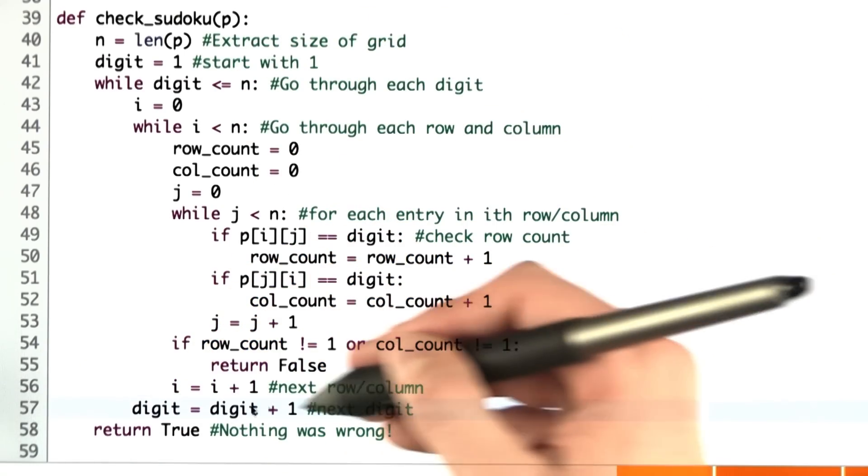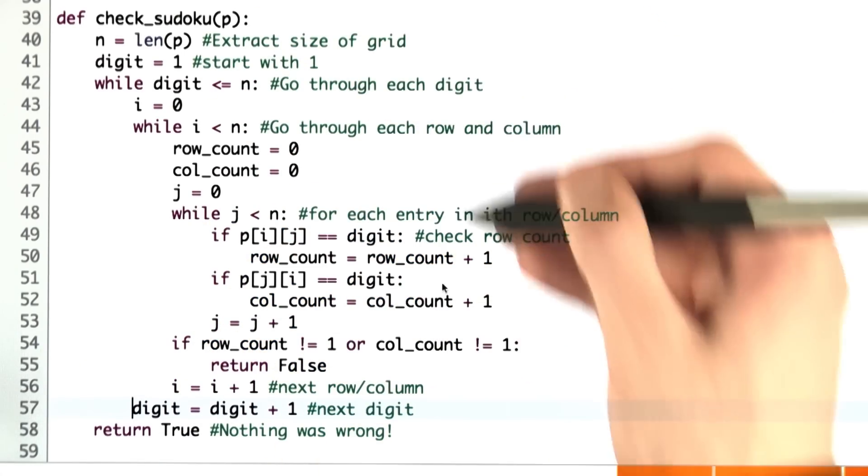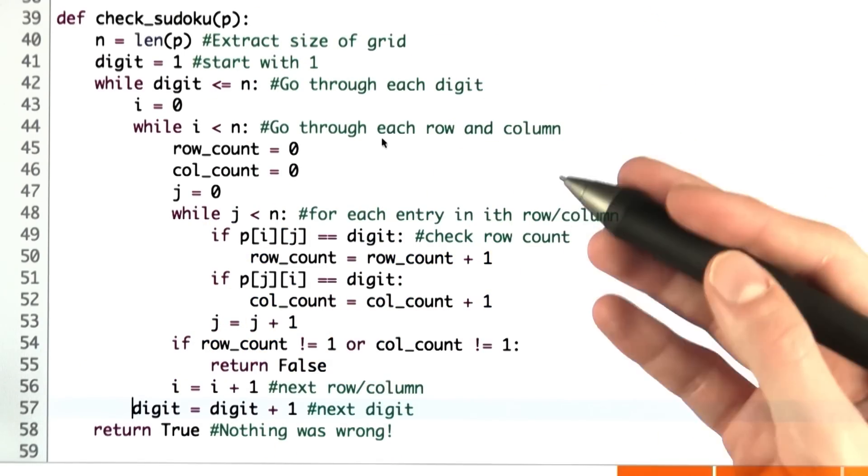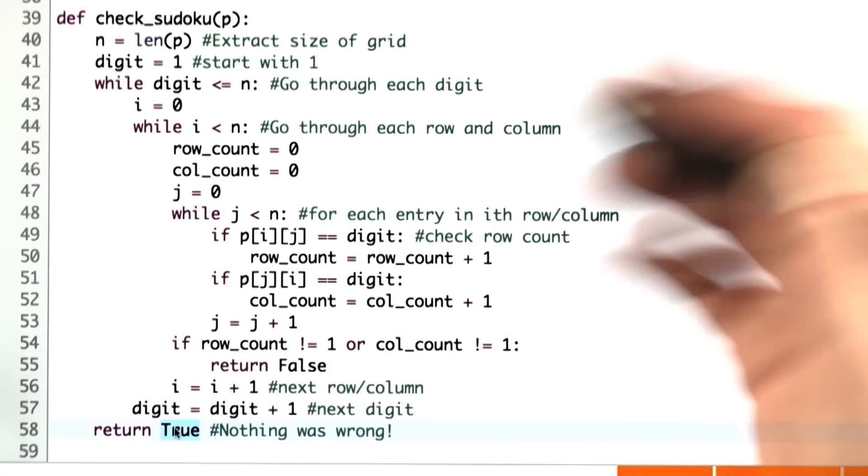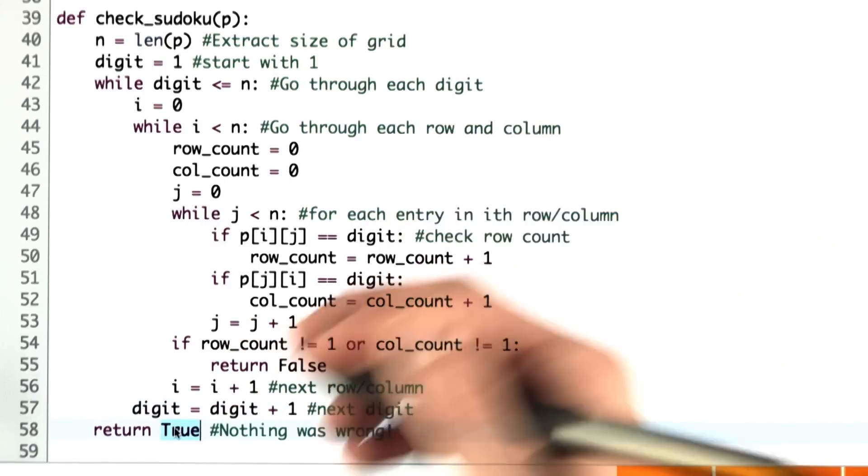After we are done with that digit, we move on to the next digit. We go through every digit, ensuring the Sudoku property for each digit. We return true because there was nothing wrong with the grid, so therefore, it passes the test.